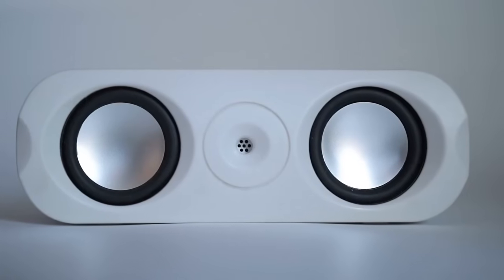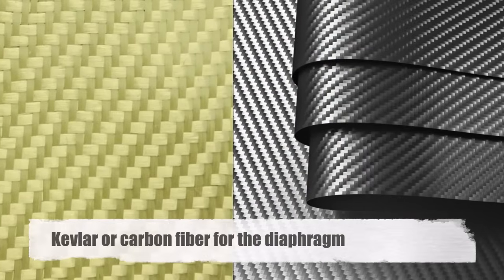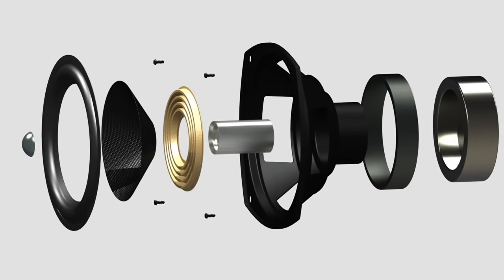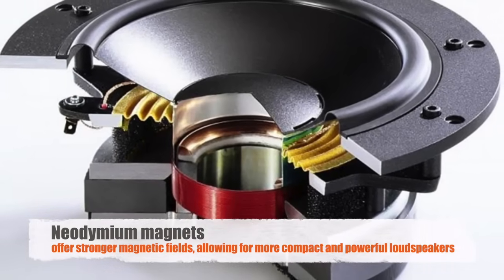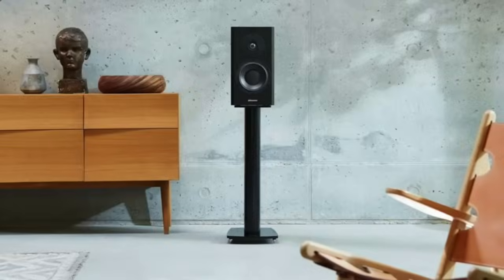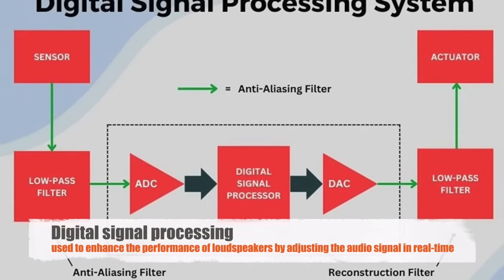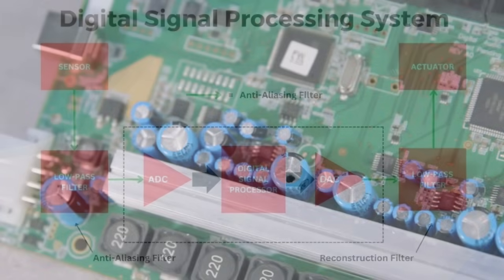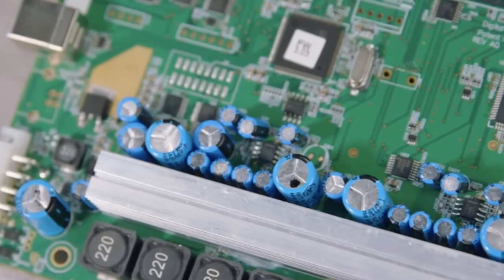Modern loudspeakers incorporate various advanced technologies to improve performance and efficiency. Some high-end speakers use materials like Kevlar or carbon fiber for the diaphragm, which are lightweight yet rigid, providing better control and reducing distortion. Innovations in magnet design, such as the use of neodymium magnets, offer stronger magnetic fields in smaller packages, allowing for more compact and powerful loudspeakers. Another area of innovation is digital signal processing (DSP), which can enhance loudspeaker performance by adjusting the audio signal in real time to compensate for room acoustics, speaker placement, and other factors, significantly improving the listening experience.